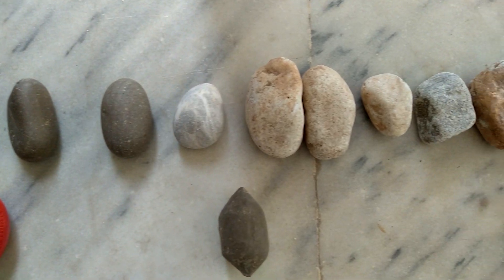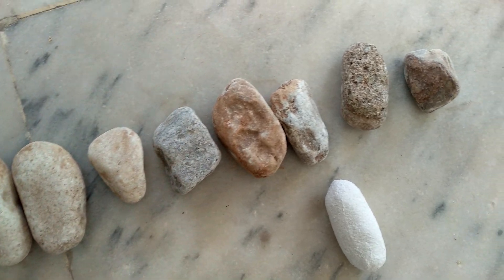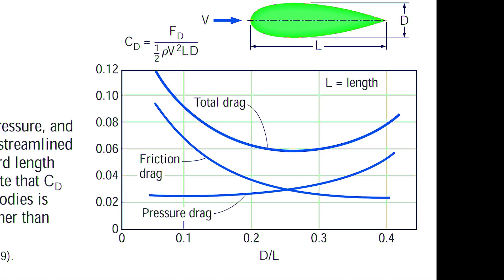Here you can see different projectiles with increasing roughness. Sling projectiles usually have a length to width ratio lower than 3 to 1. Most of the drag will be pressure drag.